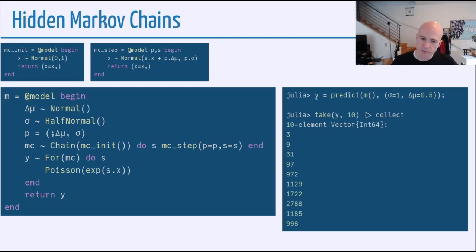So let's see what this looks like. If we, for example, say, let's set sigma is equal to 1, and delta mu is 0.5, then we can predict the model on those values. And the thing that we get out will be, well, the y is returned, so that's what we'll get as our result. So in this case, if we take the first 10 values and collect those into a vector, we get something like this.